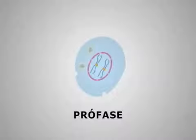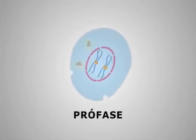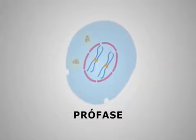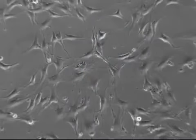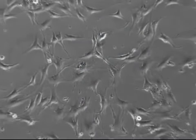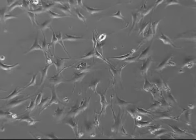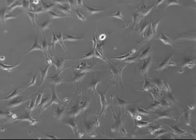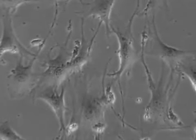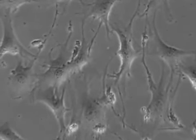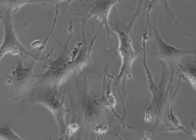A primeira fase é chamada de prófase. É nela que a cromatina, DNA, se condensa em filamentos chamados de cromossomos. As células que estamos vendo são fibroblastos em cultura, num aumento de 200 vezes. Várias delas estão se dividindo. Os fibroblastos são células alongadas e estreladas, e são importantes porque fazem parte do tecido conjuntivo, produzindo uma série de proteínas necessárias para a manutenção desse tecido.